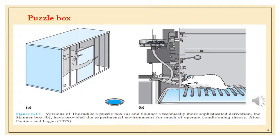This is a puzzle box used by Skinner to study rat behavior. The first version is Thorndike's puzzle box, the simplest kind used to study rat behavior, while the second is the modified, technically more sophisticated form developed by Skinner. The trial-and-error learning for a lever was used, and with the rat's repeated behavioral responses, the theory of operant conditioning was developed.